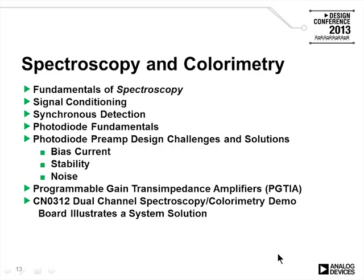Let's move to the next topic: spectroscopy and colorimetry. In this section, we'll cover fundamentals of spectroscopy, signal conditioning required, synchronous detection, fundamentals of photodiodes, and fairly detailed discussions on photodiode preamp design. In this type of circuit, you're dealing with very low currents, so bias current is a problem, stability issues arise due to input capacitance, and there are trade-offs between noise and bandwidth. Circuit note CN312, the dual channel spectroscopy demo, illustrates a nice system solution for this.